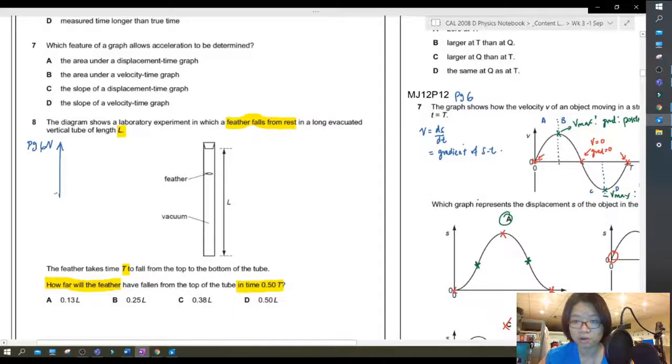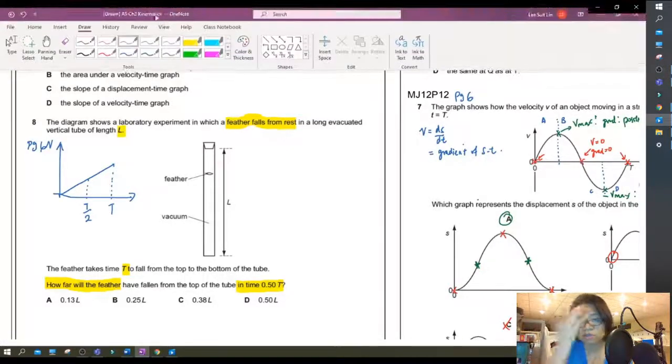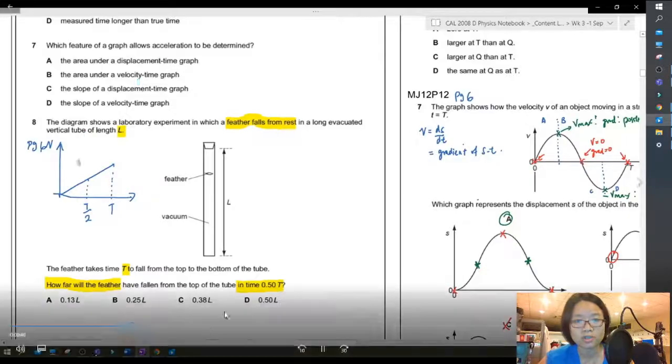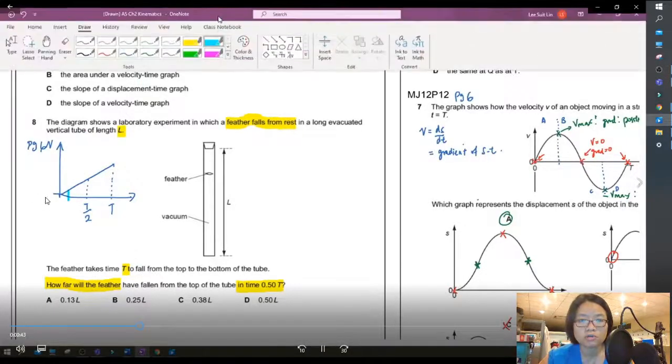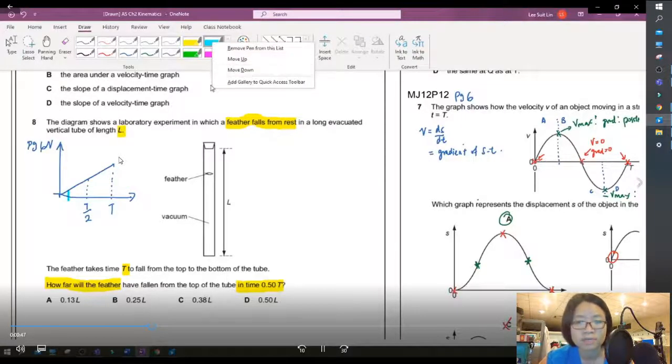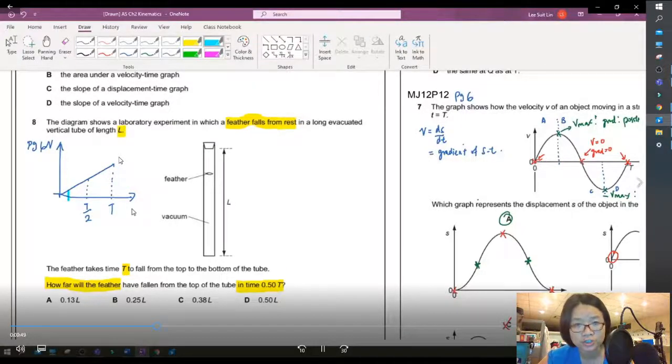The first way is using the graphing method. Okay, so the most useful graph to draw would be the velocity against time graph. So from here I know that there is constant acceleration, so I'm just going to draw a Vt graph in a straight line. Alright, you should be familiar with this graph after watching the lecture.